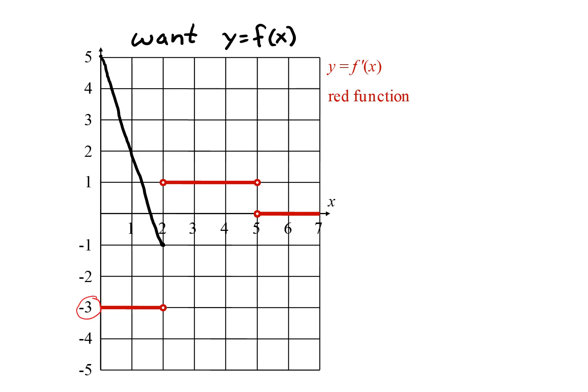We keep going down with a slope of negative 3 until we get to the point where x equals 2. At that point, the derivative changes. To the right of x equals 2, the derivative is positive 1, so the function slopes upward one unit for each unit it goes across. This continues until x equals 5, after which the derivative is 0. A slope of 0 means the function is horizontal.